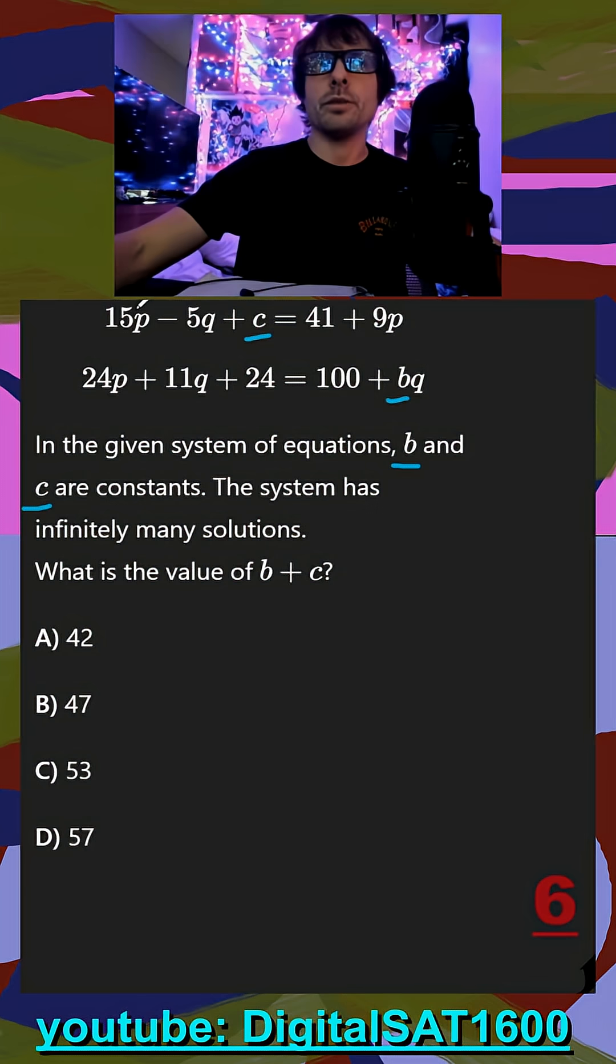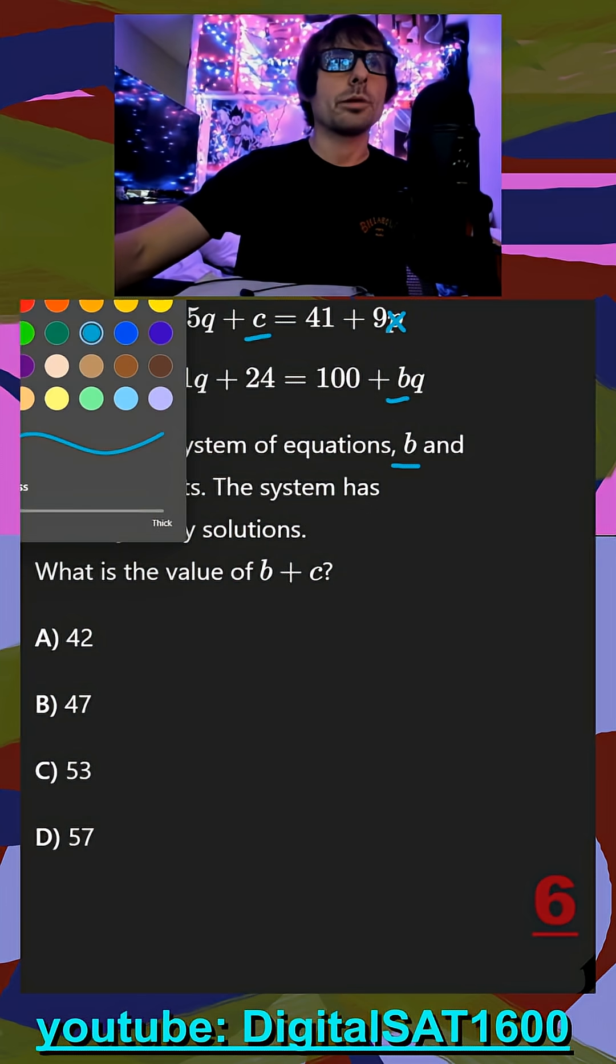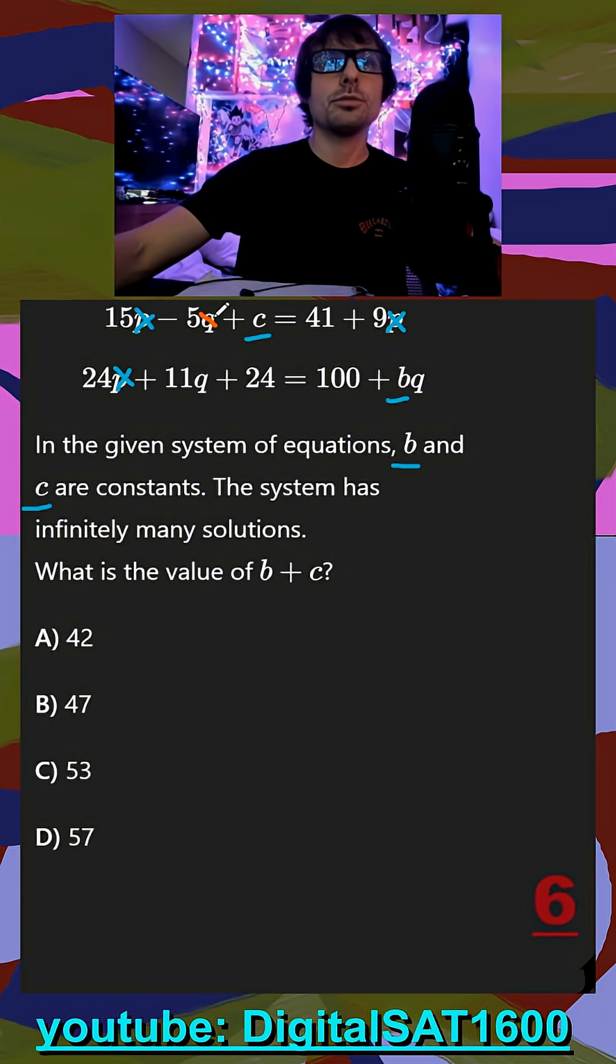To make it more familiar, I'm going to replace p with x and replace q with y. Now it's going to be easier to get it in slope-intercept form.